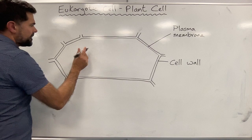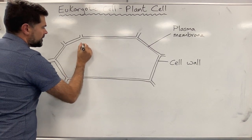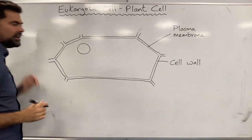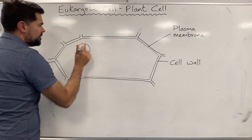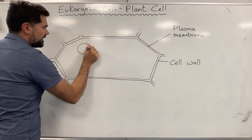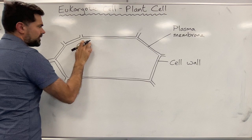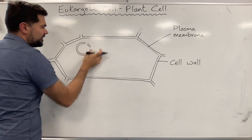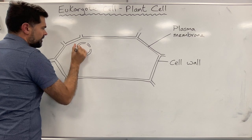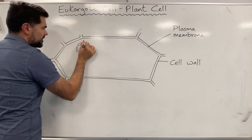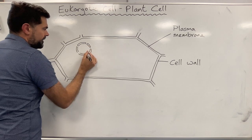An important structure is the nucleus. A lot of people draw a nucleus as just a circle — that's not exactly right. The nucleus is actually made up of two membranes, so I'm going to draw another membrane around it. It also has little pores — like little holes — that allow RNA from the inside to go out.